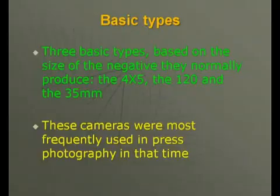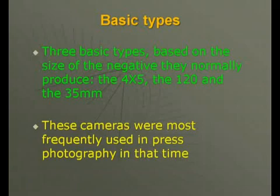The cameras most frequently used in press photography at that time can be divided into three basic types based on the sizes of the negative film they normally produced. The three kinds of cameras were the 4x5 camera, the 120 camera, and finally the 35mm camera.